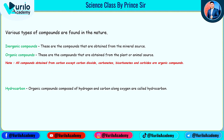First we will start with the basic concept. Compounds are of two types. You can see some organic compounds — remember, organic compounds are those obtained from a living source, which can be a plant or an animal source. These are the compounds obtained from plant or animal sources. Other than living sources, if you obtain from a mineral source, you get inorganic compounds.